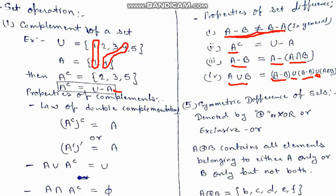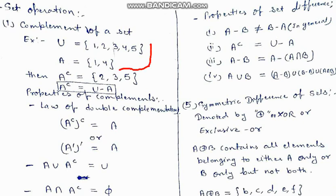Next is symmetric difference of sets, denoted by this symbol. This is called XOR operation or exclusive OR gate, which we studied in digital electronics. In XOR, it contains all elements belonging to either A only or B only but not both.